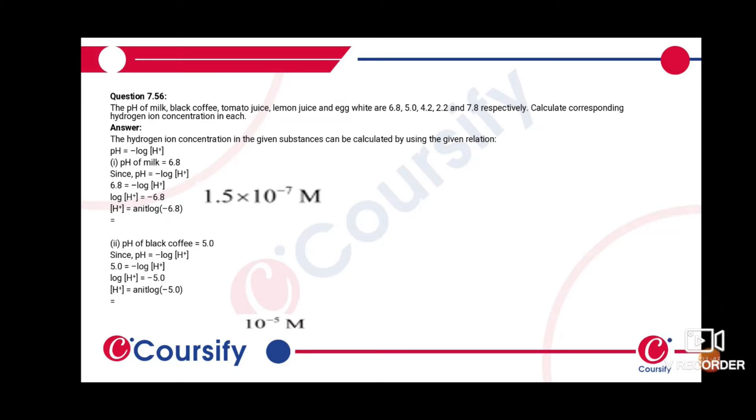The pH of milk, black coffee, tomato juice, lemon juice, and egg white are 6.8, 5, 4.2, 2.2, and 7.8 respectively. Calculate the corresponding hydrogen ion concentration for each.